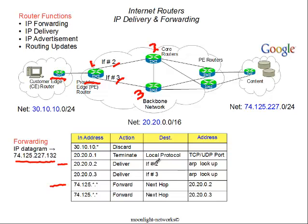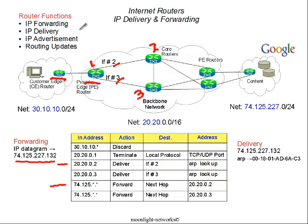It's also going to select the outgoing interface — in this case interface number two. So if we were on Ethernet, an Ethernet frame would be constructed with the MAC address of router number two, and then the IP datagram with destination 74.125.227.132 is going to be forwarded to that router. In a similar fashion, router number two will perform the same lookup with its own table. The table at each router is different because of the way routing updates are performed. Once the packet reaches the final destination, that router is going to deliver the messages directly to the host machines with that particular address.